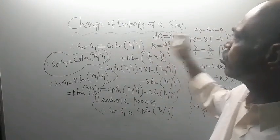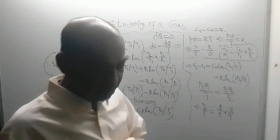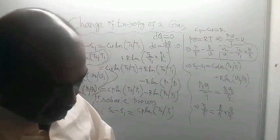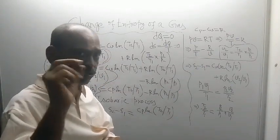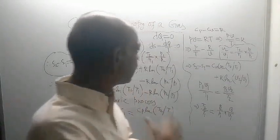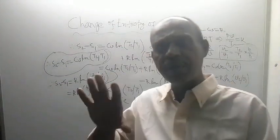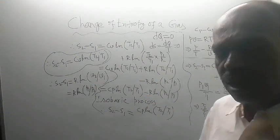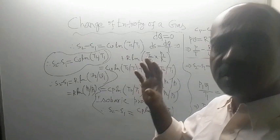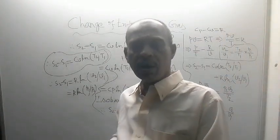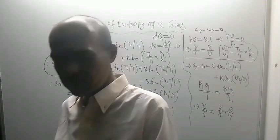This was all about change of entropy of a gas for a closed system. For all the calculations here, 1 kg mass of gas was taken. If the mass of gas mentioned is say 3 kg or 7.5 kg, then you need to use that mass to calculate entropy — the entropy derived here is per unit mass. If mass is given, multiply that mass with the entropy to get the actual value. Thank you all for watching this video.